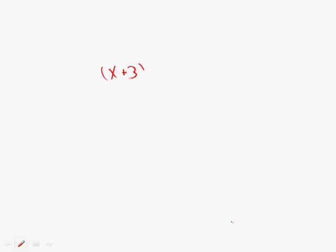This question: we have (x + 3)(y - 4) = 0. In column A, we have the product of x and y, so x times y, and in column B, we have negative 12.